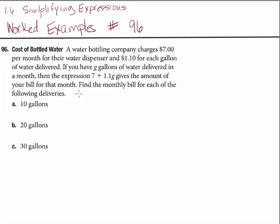We're asked to find the monthly bill for each of the following deliveries. So we have three questions to answer. What's the bill for a family that has 10 gallons of water delivered? What's the monthly bill for a family who has 20 gallons delivered? And what about for a family who has 30 gallons delivered?